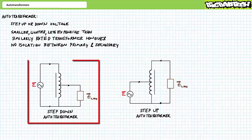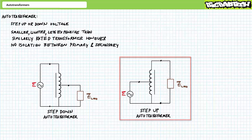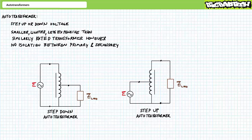A step-down auto transformer uses the complete single winding as the primary input and only a portion of it as a secondary output. Conversely, a step-up auto transformer uses only a portion of the single winding as the primary input and the complete winding as a secondary output. Let's look at each configuration separately.